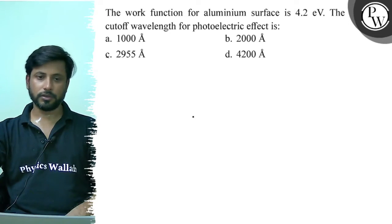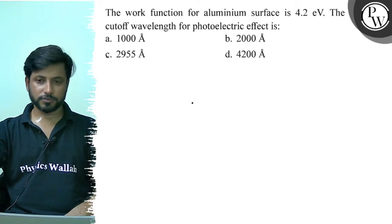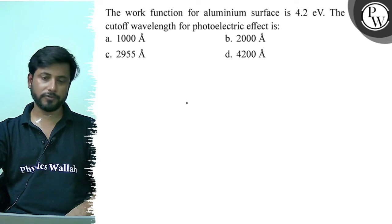Hello, let us see this question. The work function for aluminum surface is 4.2 electron volt. The cut-off wavelength for photoelectric effect is.